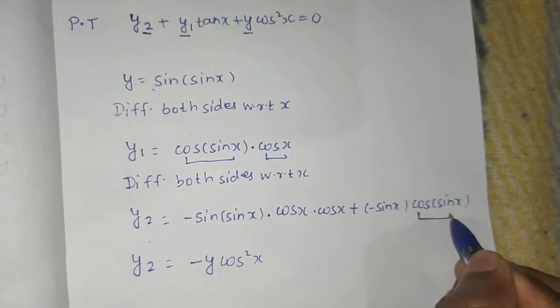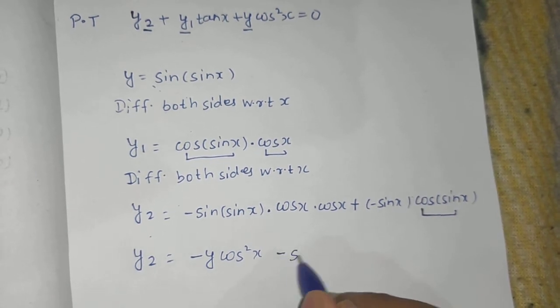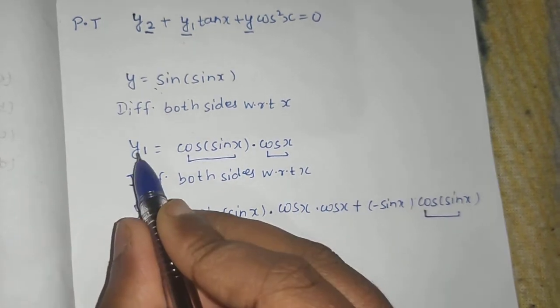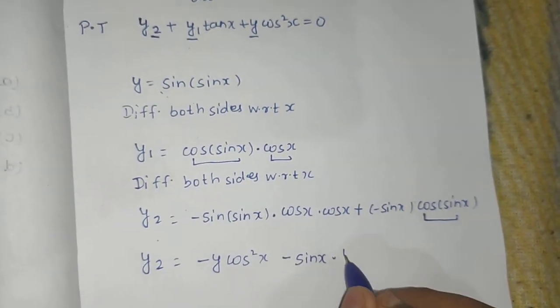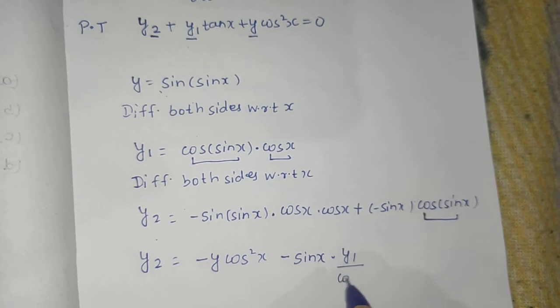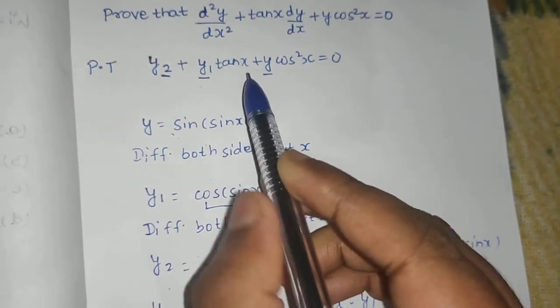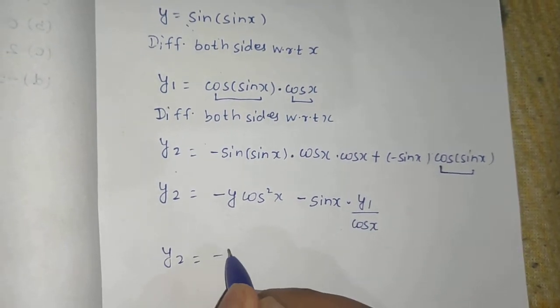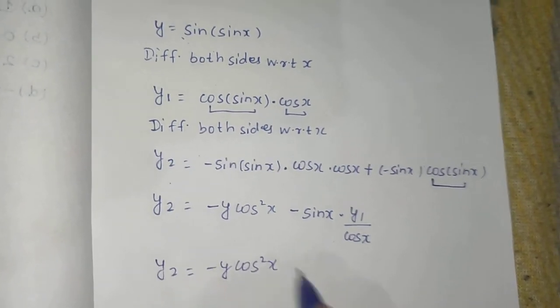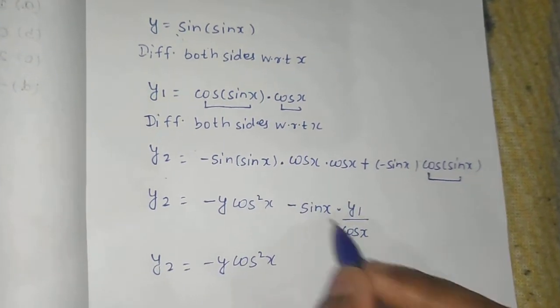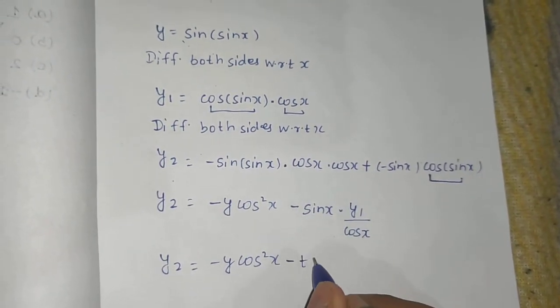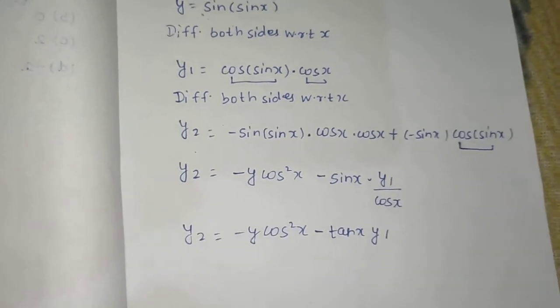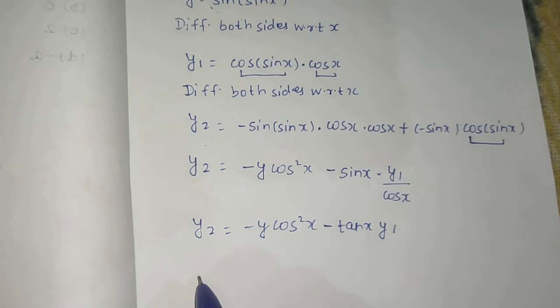This you can write as minus of sine x. And in place of cos of sine x, from this particular equation I am writing this as y1 divided by cos x, because I can see I need to prove something like this. Now y2 equals to minus y cos square x. Sine by cos is your tan, so minus tan x into y1. Now bringing everything to the left hand side, so y2 plus y1 tan x plus y cos square x equals to 0.